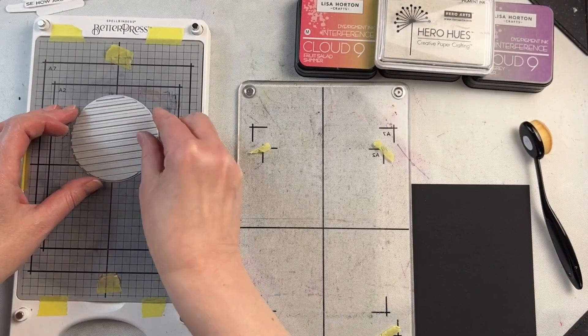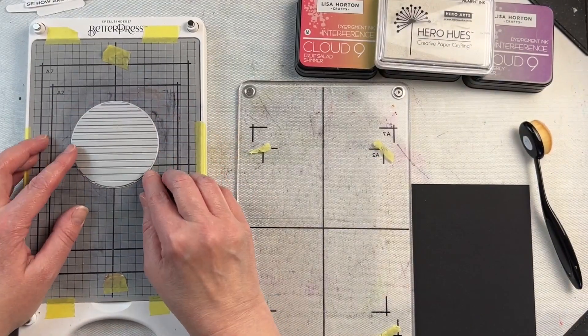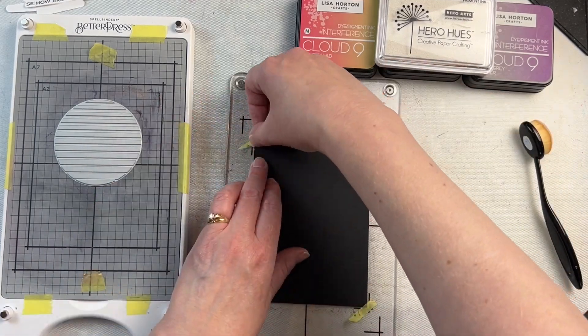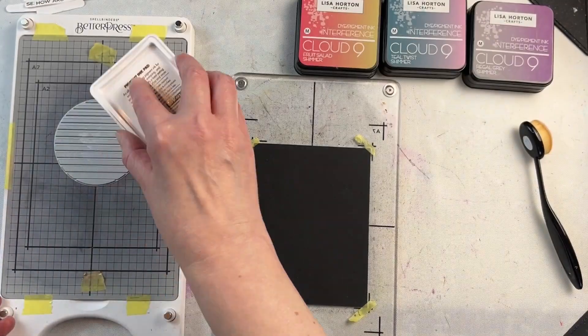The other press plate in the set has lines on it, and again it's very easy to line up and make sure it's nice and straight using the grid system on the base of the Better Press.